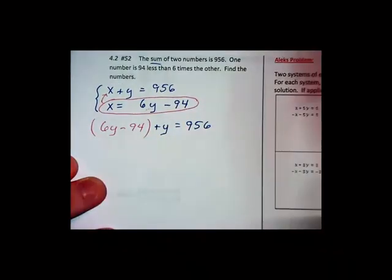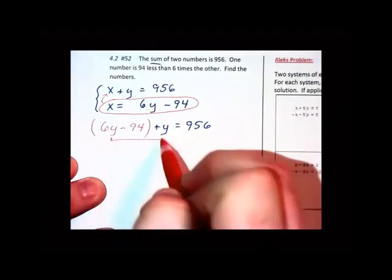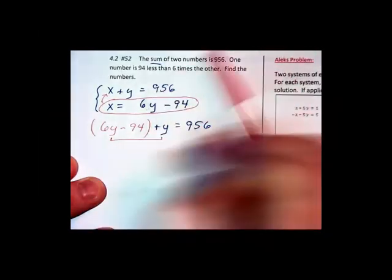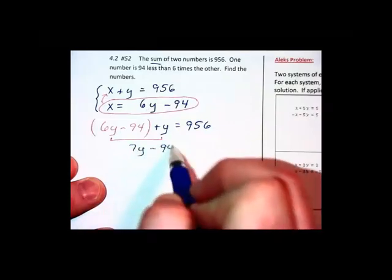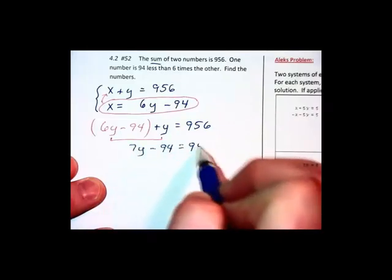We combine like terms, 6y and 1y add together. We now have 7y minus 94 equals 956.